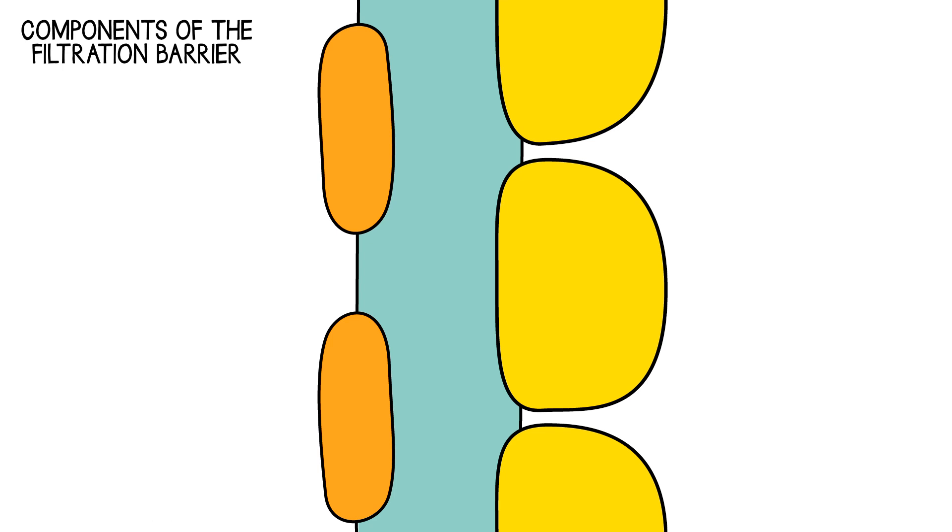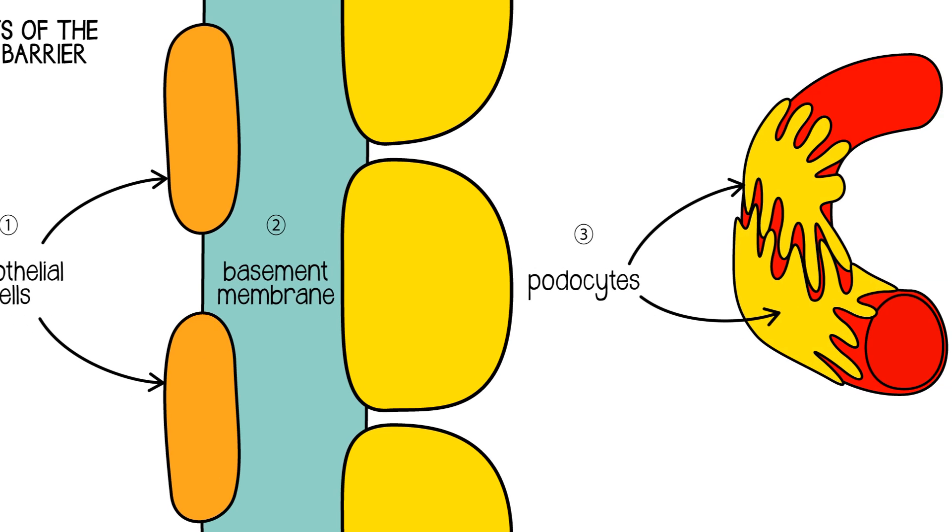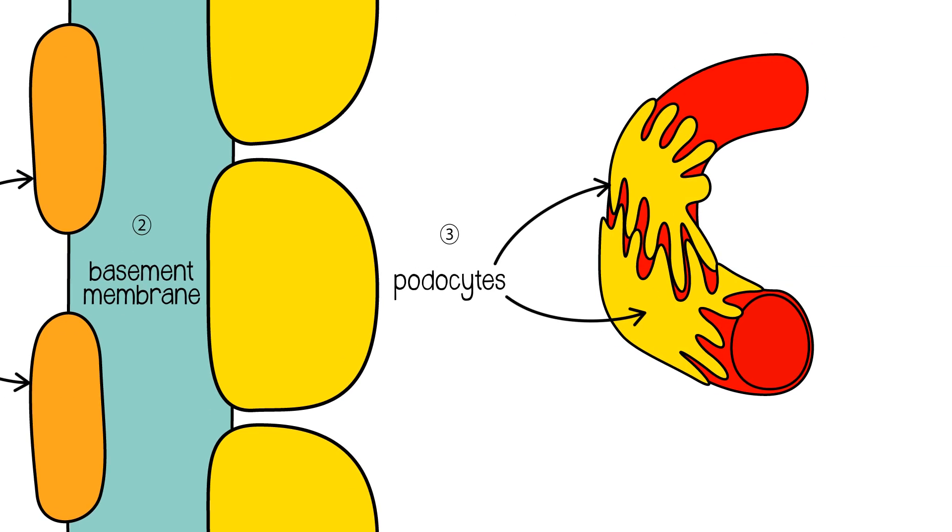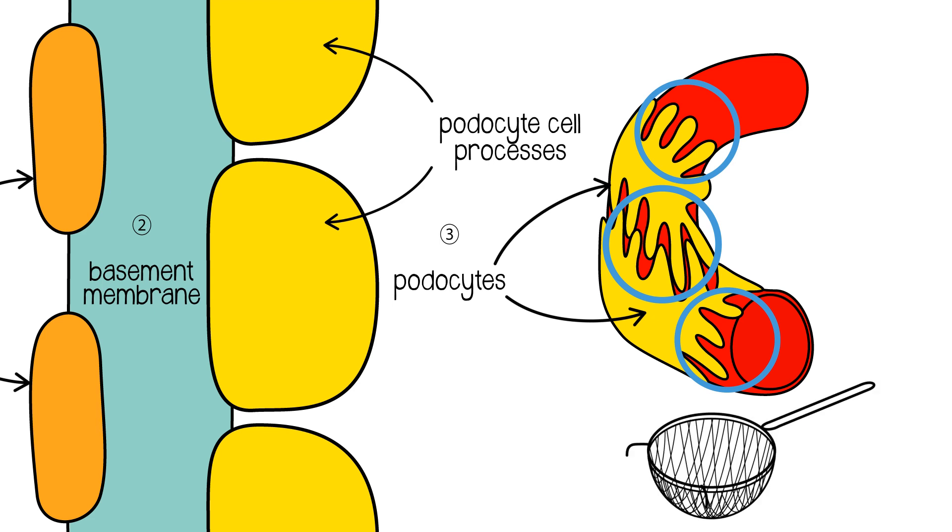The barrier itself is composed of the endothelial cells of the capillary, and then you've got a basement membrane, which is a collagenous membrane on which those cells are mounted. And then on the other side you've got the beginning of the Bowman's capsule, which is the podocyte cells, which form the epithelium there. The podocyte cells have finger-like processes which interdigitate, forming what looks rather like a sieve if you look at an electron micrograph.